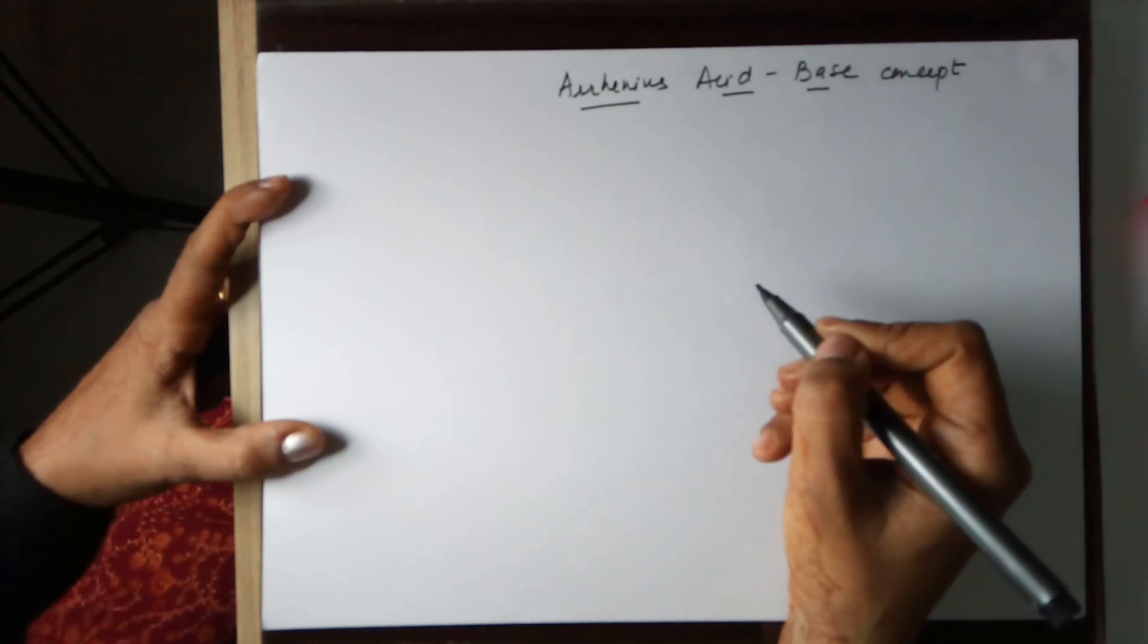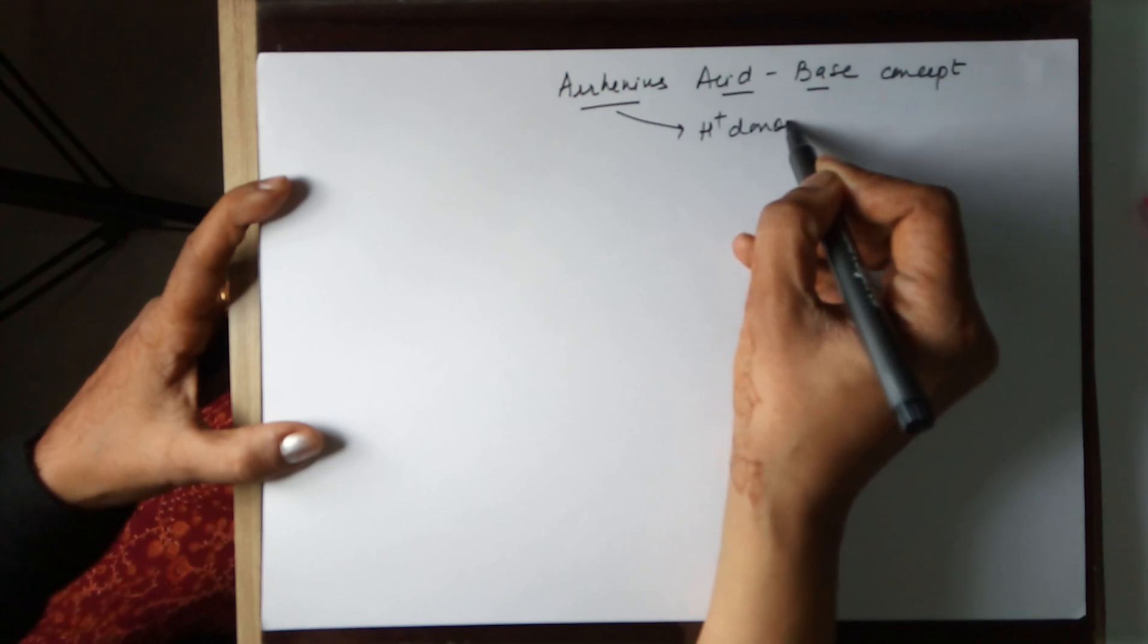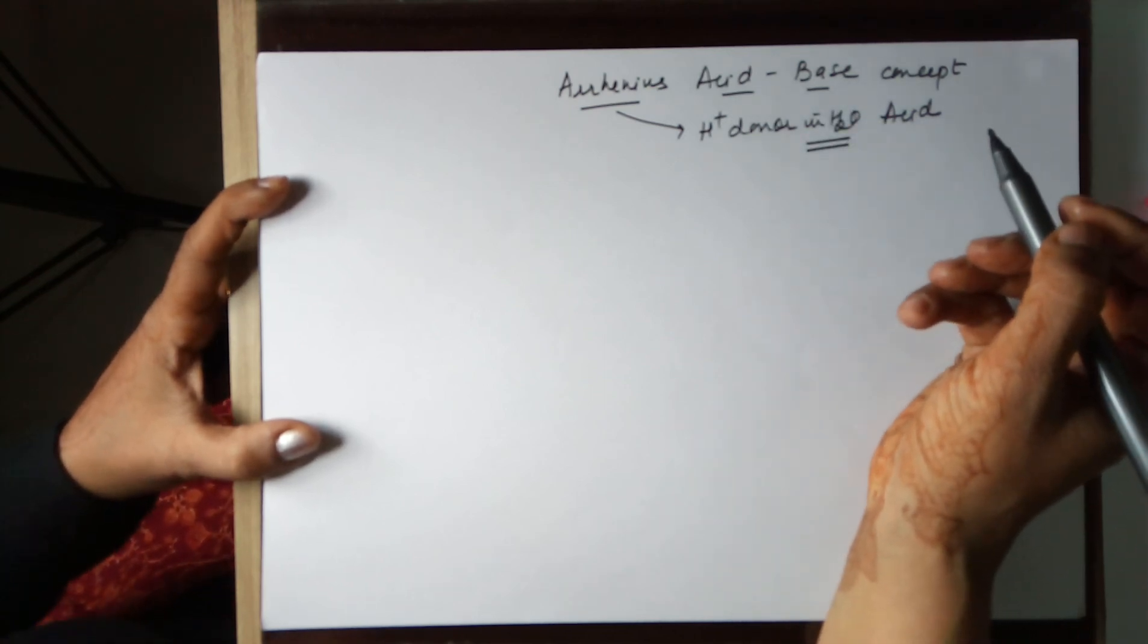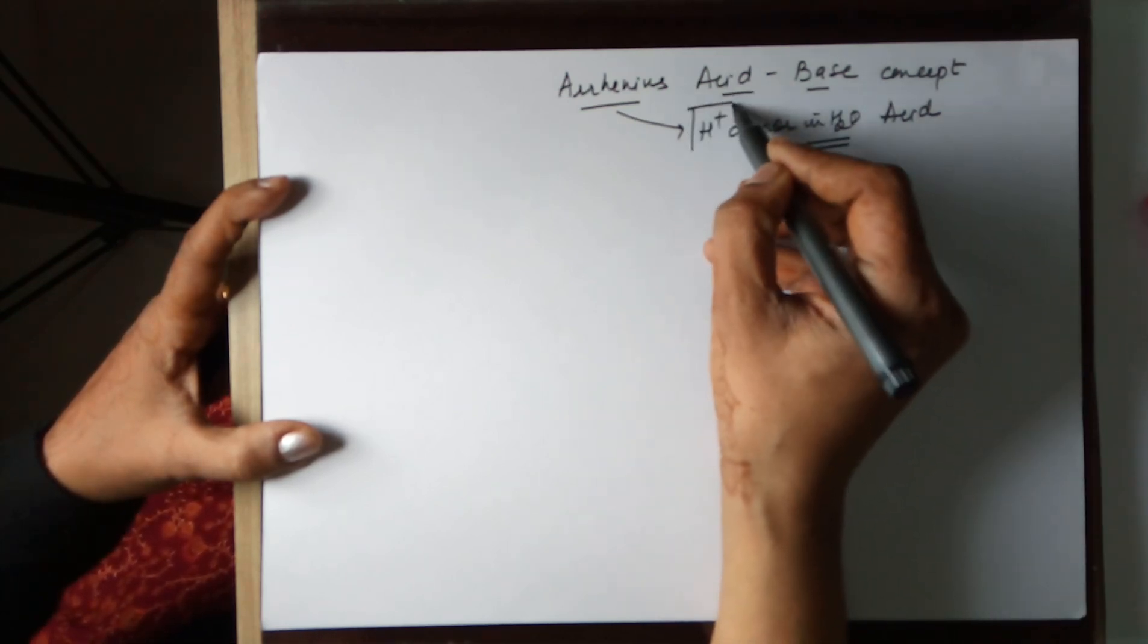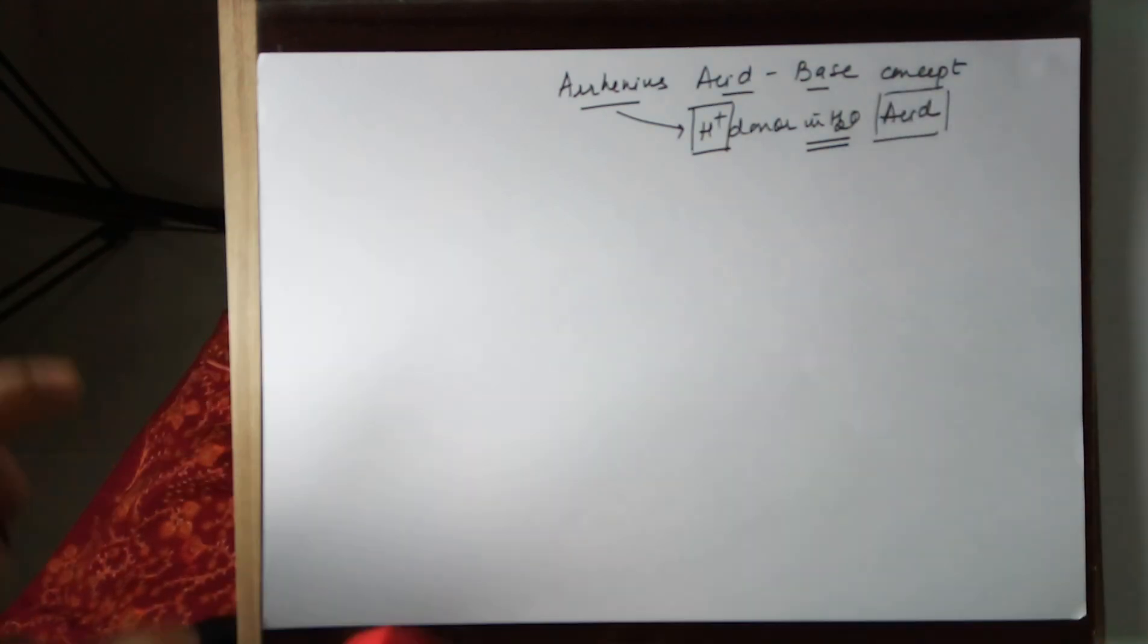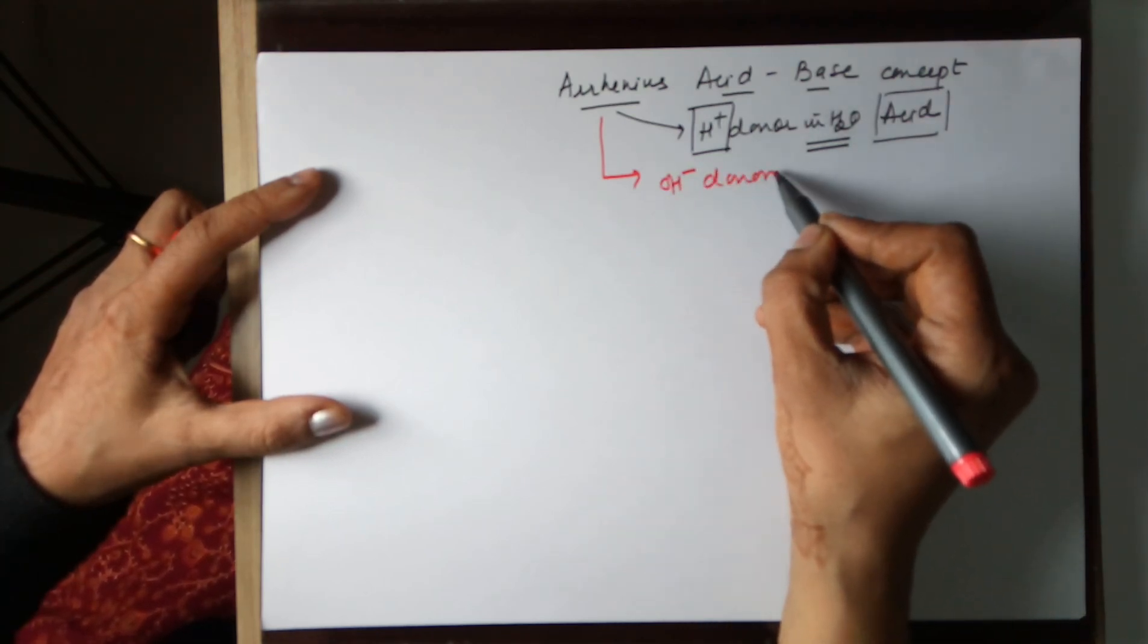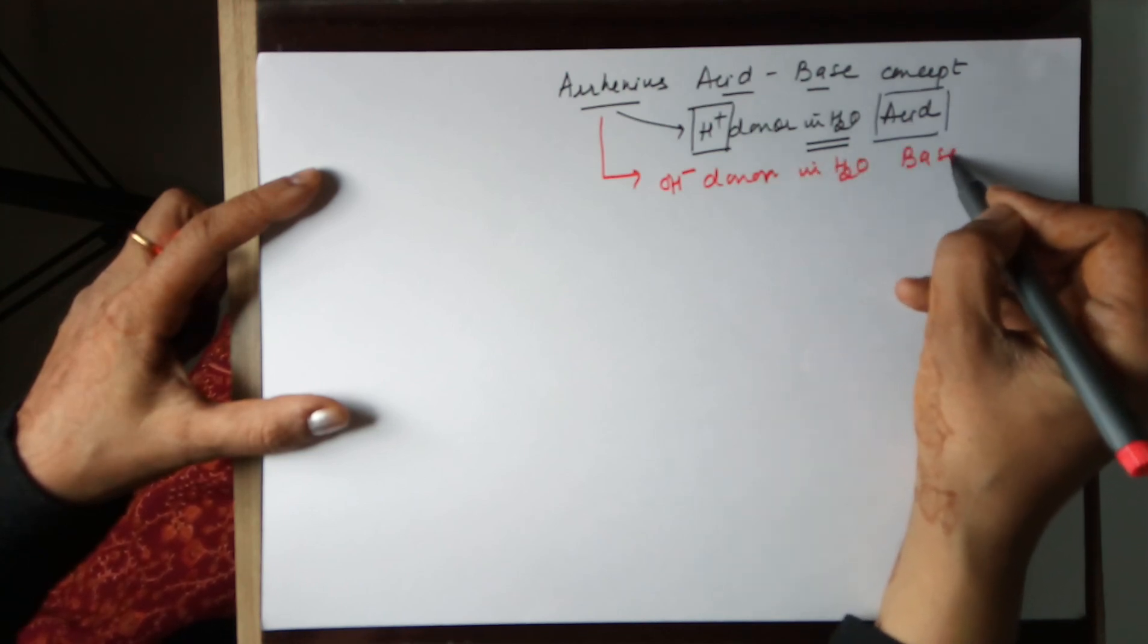The Arrhenius acid-base concept states that a proton donor is called an acid in water. The definitions given by Arrhenius are valid for aqueous medium, where anything able to donate a proton is called an Arrhenius acid. Whereas a base according to Arrhenius is a hydroxyl ion donor in aqueous medium.